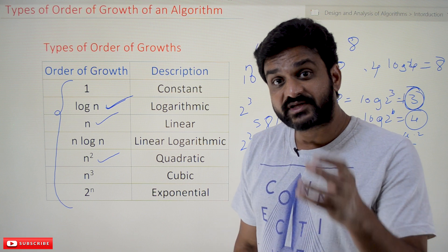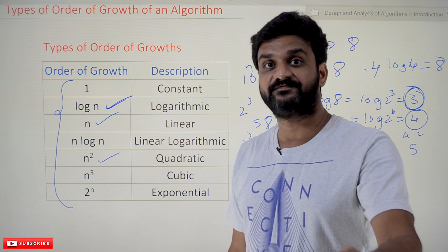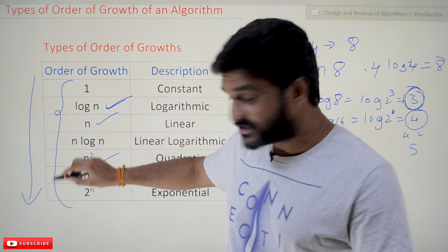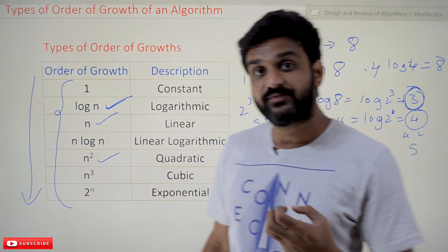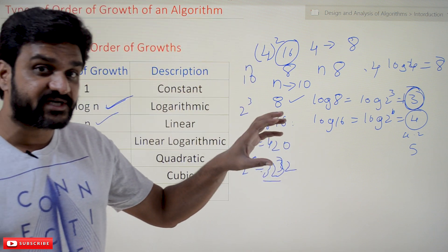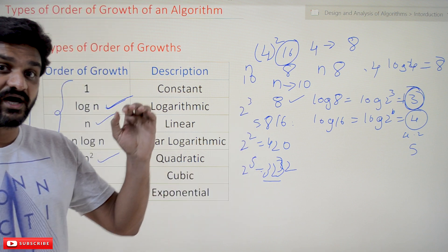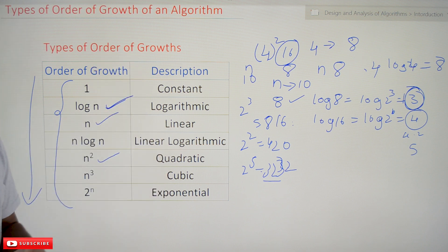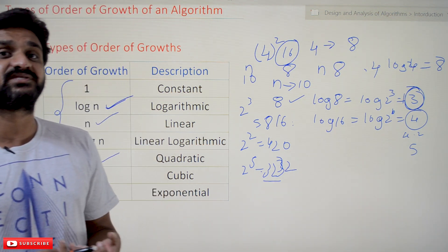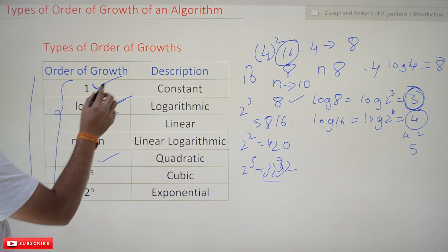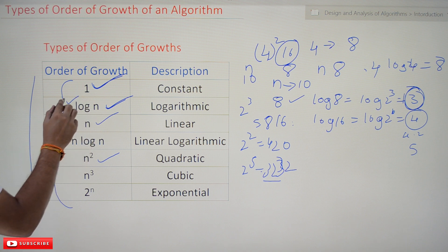These are the different types of order of growth used to calculate the efficiency of an algorithm. As we move from top to bottom, the amount of time taken by an algorithm to get the output is increasing, so the efficiency is decreasing. Constant time means this is highly efficient — we rarely encounter algorithms like this. Log n algorithms are efficient algorithms.